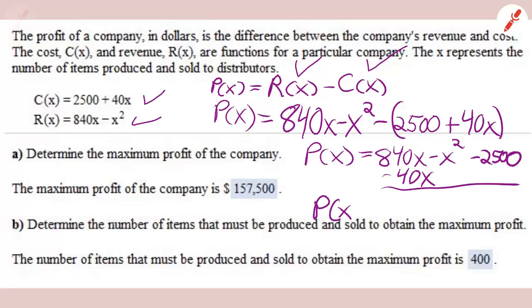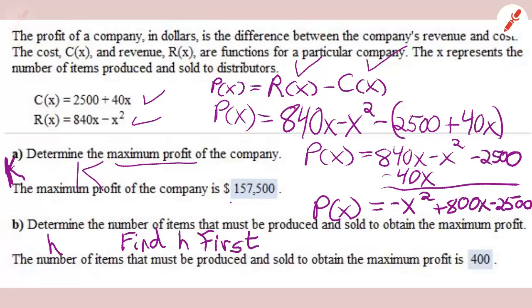So we find out that the profit function written properly in descending order, the way we do with polynomials, is negative x squared plus 800x minus 2500. A determines the maximum profit. Whatever is being maximized or minimized is k. But you have to find h first. h is going to be whatever x is, but the amount of it that it takes to get to the maximum or minimum.